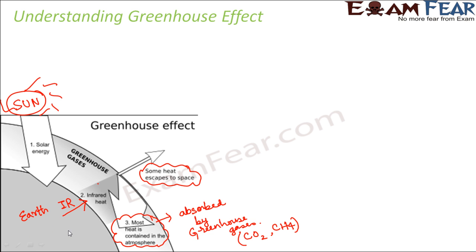This infrared radiation heats up the Earth's surface, and the cycle repeats. As the Earth's surface heats up again, it emits infrared radiation again — some escapes to space and some is absorbed by the greenhouse gases. This process continues until no infrared radiation is left to emit. As a result, infrared radiation remains trapped within the Earth, increasing its overall temperature, which is necessary for the survival of living organisms. This is the concept of greenhouse effect.